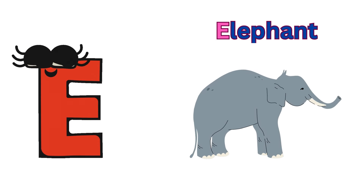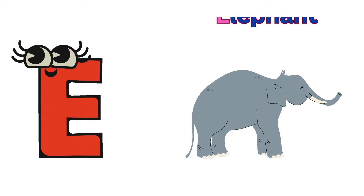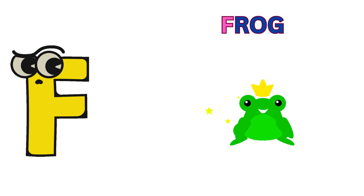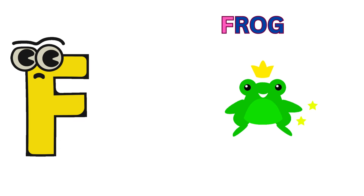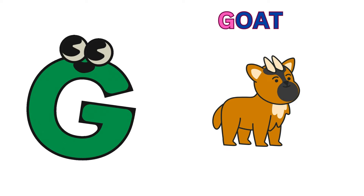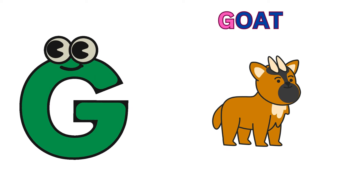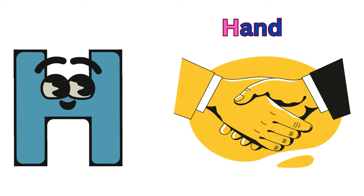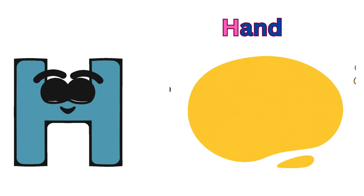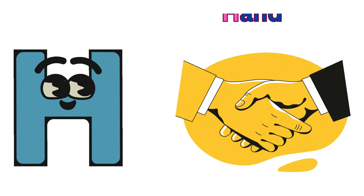E is for elephant, e-e-elephant. F is for frog, f-f-frog. G is for goat, g-g-goat. H is for hand, ha-ha-hand.